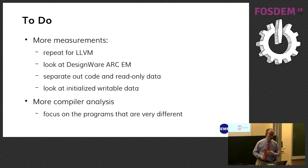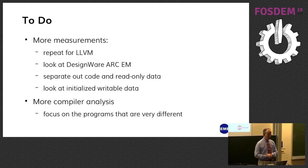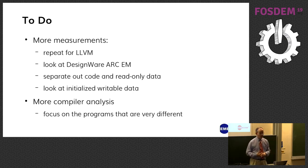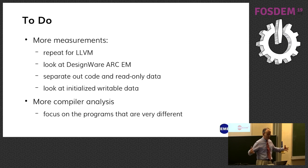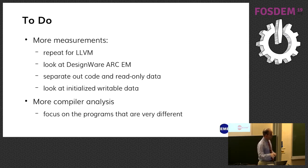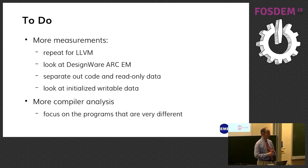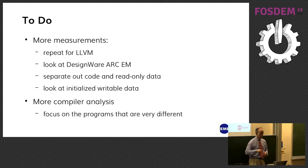What do we need to do next? We need more measurements. We need to repeat this for LLVM — it's all packaged up, it'll be easy, and I hope to do that this week. I want to give ARC a fairer test by looking at their EM processor rather than HS, which is a high-performance Linux class processor. I'd like to separate out code and read-only data, since there are optimizations that push stuff into data to drive the code. I'd also like to look at initialized writable data, because that often goes into ROM as well.